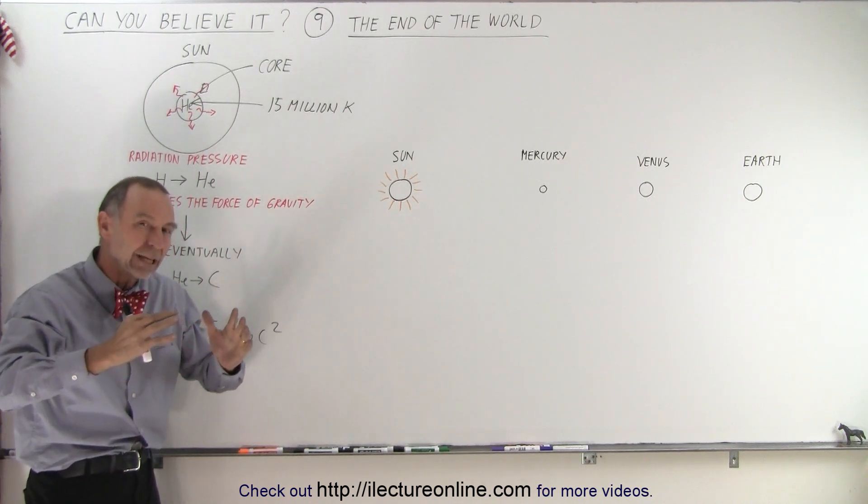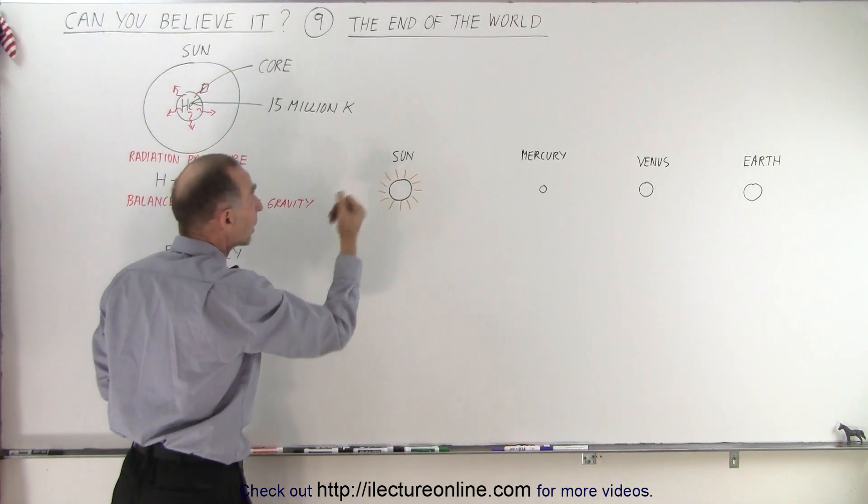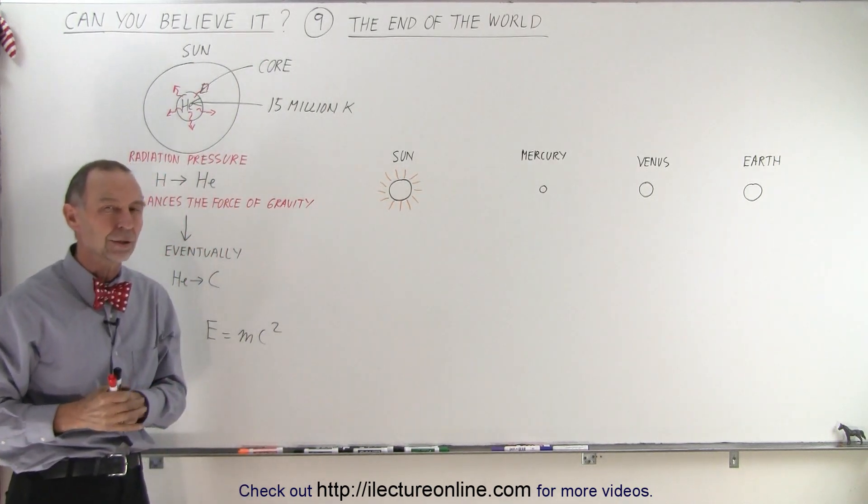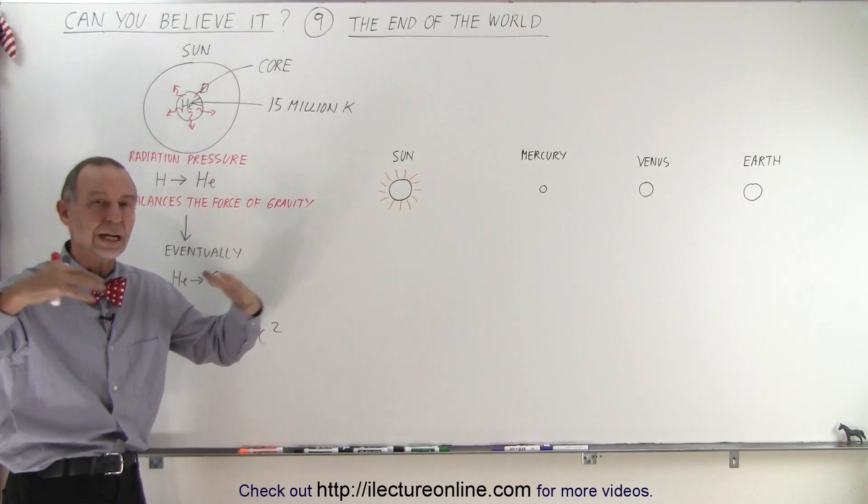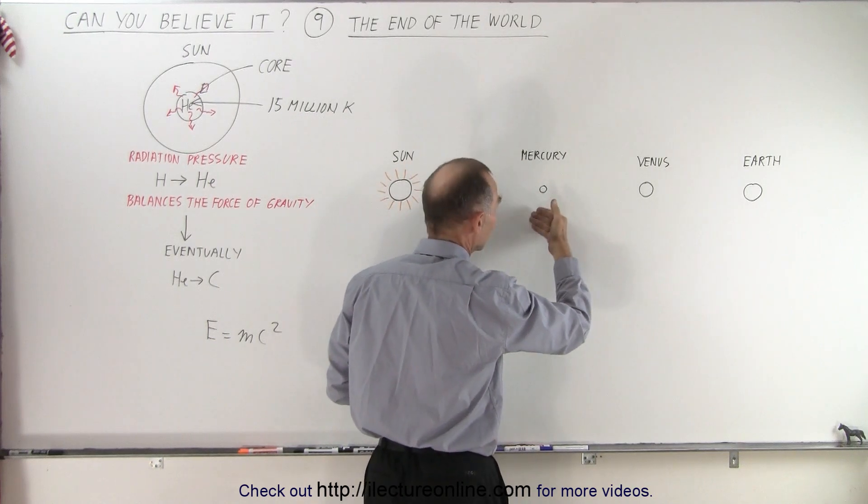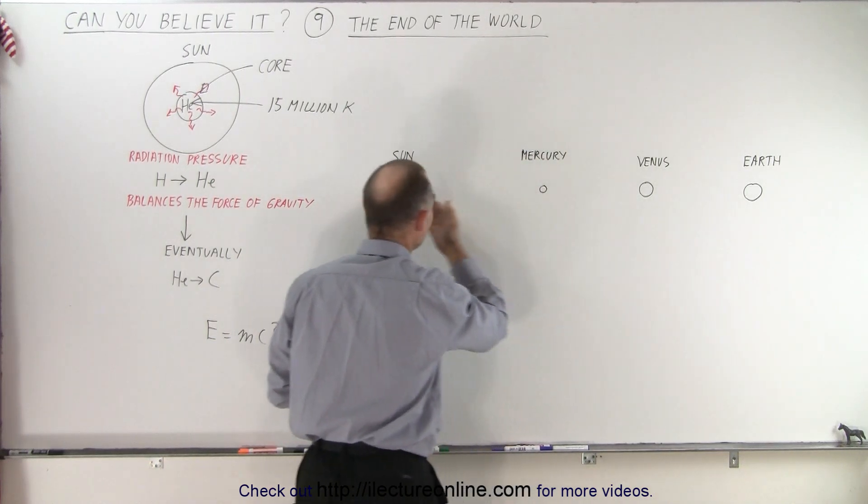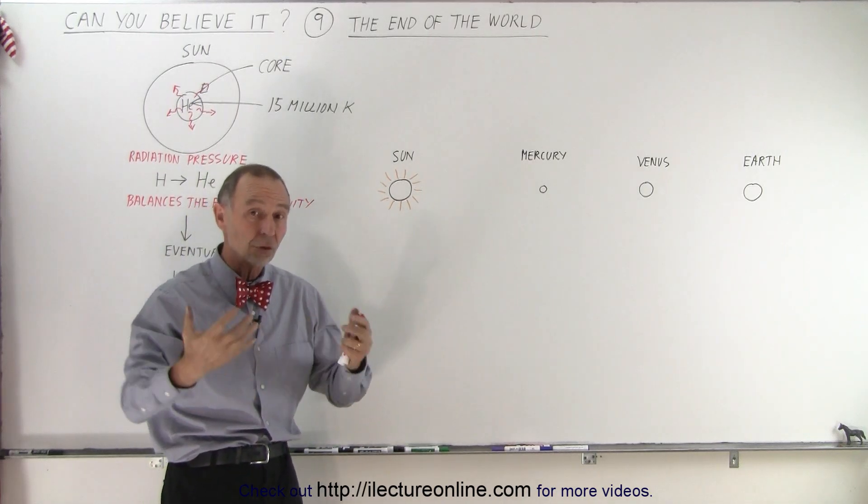And so the radiation pressure will begin to expand the entire sun. And the sun will become bigger and bigger and bigger. The sun will turn into what we call a red giant. Well notice that the three innermost planets are Mercury, Venus and the earth. And of course they are very long distance away from the sun.